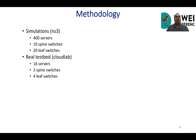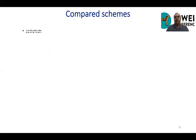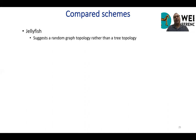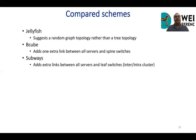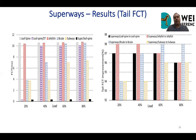Let's talk about the methodology. We implemented Superways in two different environments: first simulations, then a real testbed. In NS3 we simulated 400 servers with 10 spine switches and 20 leaf switches, and repeated the experiment in a real testbed with 16 servers, two spine switches, and four leaf switches. We compared four different schemes: leaf-spine, Jellyfish (a random graph topology rather than a tree topology), BCube (which adds one extra link between all servers and spine switches), and Subways (which adds an extra link between all servers and leaf switches, either inter- or intra-cluster).